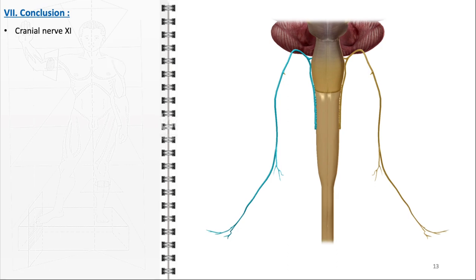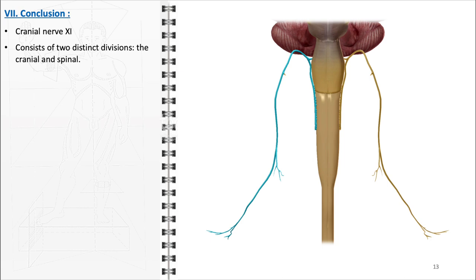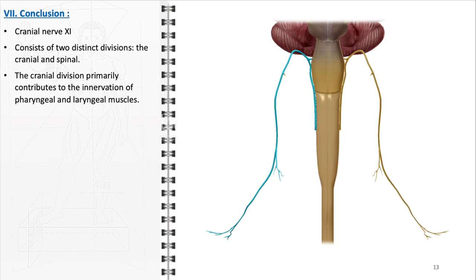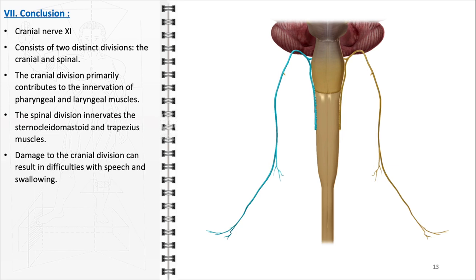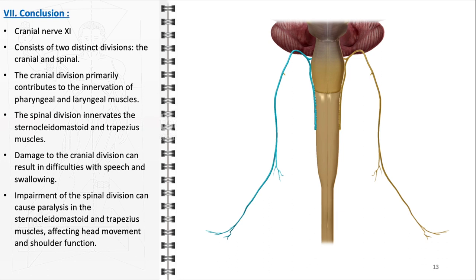In conclusion, the accessory nerve, or cranial nerve 11, is an essential component of the human nervous system with a unique structure and dual functionality. The cranial division primarily contributes to the innervation of pharyngeal and laryngeal muscles, playing a crucial role in swallowing and vocalization. The spinal division innervates the sternocleidomastoid and trapezius muscles, pivotal for movements of the head and shoulders and for maintaining posture. Impairment of the cranial division can result in difficulties with speech and swallowing, while impairment of the spinal division can cause weakness or paralysis in these muscles, affecting head movement and shoulder function.